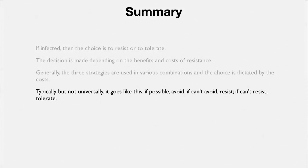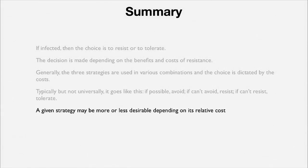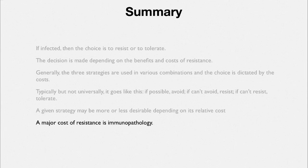To summarize: if an infection occurs, there is a basic decision—should the infection be resisted or should it be tolerated? That will depend on the benefits and costs of each. There are three strategies used in various combinations. Typically: if possible, avoid the infection; if you can't avoid it, resist it; and if you can't resist it, tolerate it. Which strategy is selected depends on how much it costs—and that may not be optimal, because a mistake in the decision can lead to pathology. A major cost of resistance is immunopathology, and the classic case of that is the bacterial pneumonia that occurred in the 1918 flu epidemic.